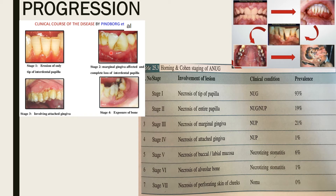Stage 4 is necrosis of the attached gingiva; Stage 5 is necrosis of the buccal or labial mucosa — termed necrotizing stomatitis; Stage 6 is necrosis of the alveolar bone, also called necrotizing stomatitis; Stage 7 is necrosis perforating the skin of the cheeks — known as Noma, a completely necrosed area of the cheeks.